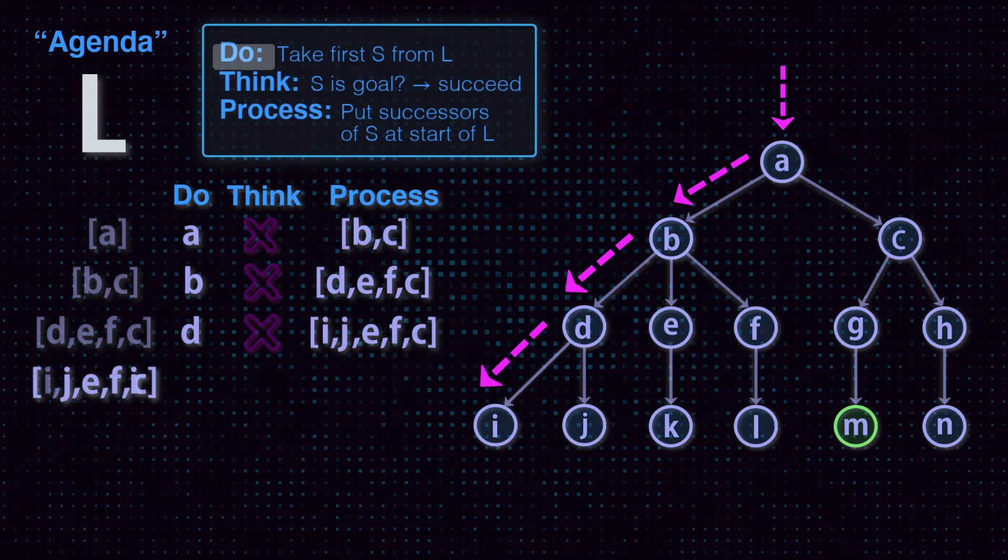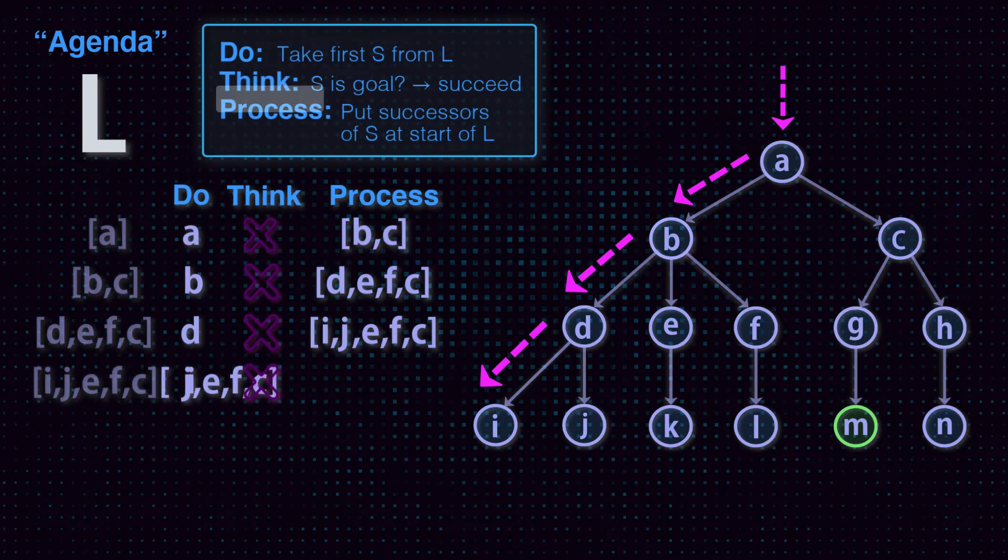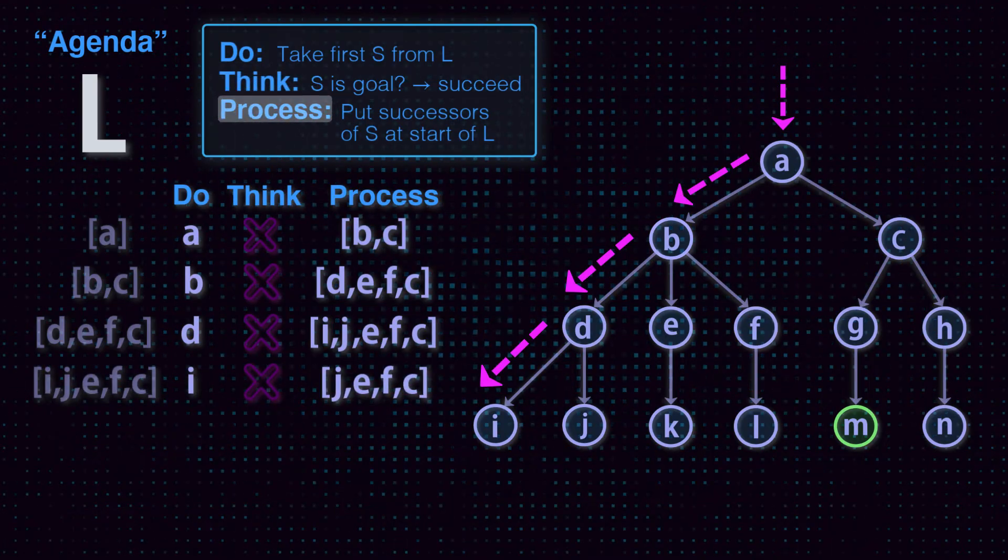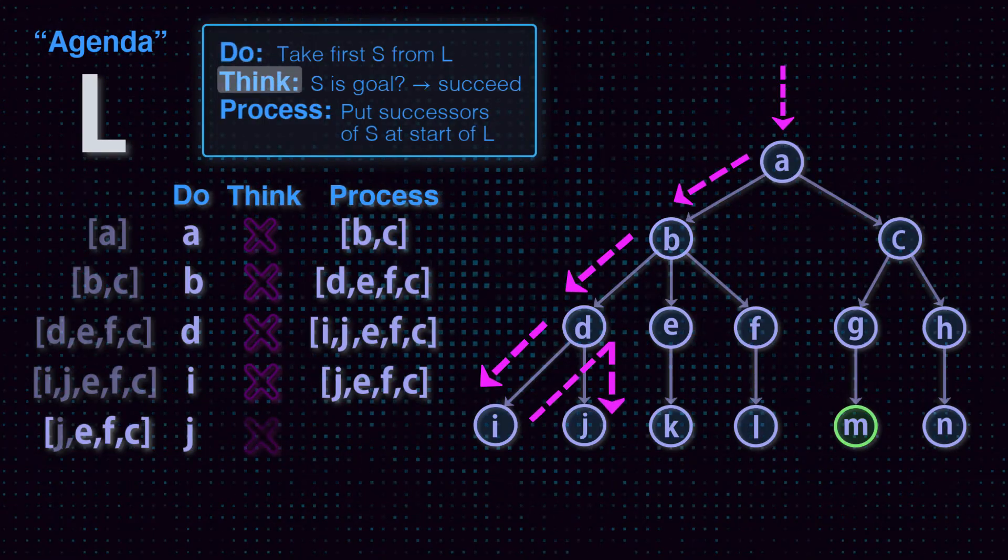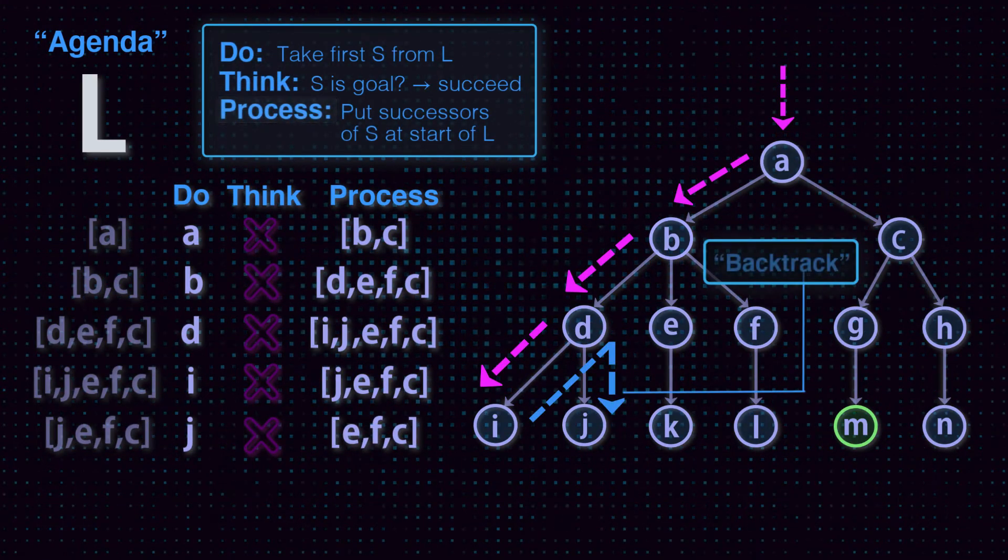Node I has no successors, so nothing is added to the agenda. But with node J, the search recovers from the dead end. This is called a backtrack.